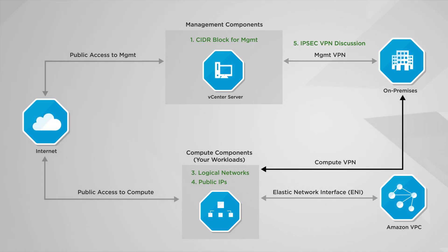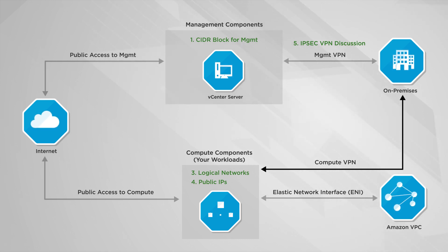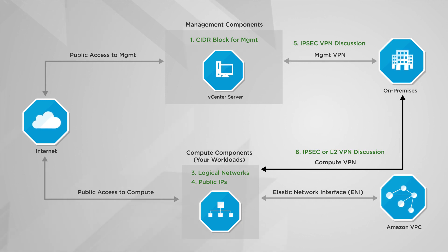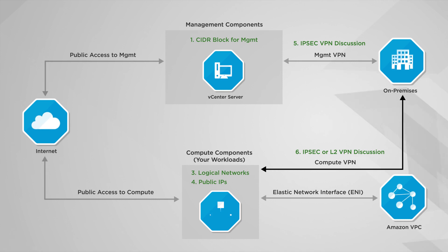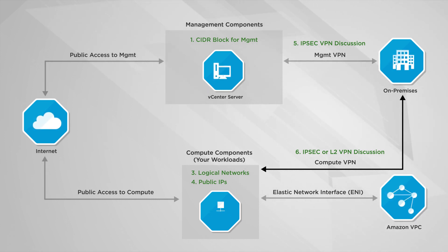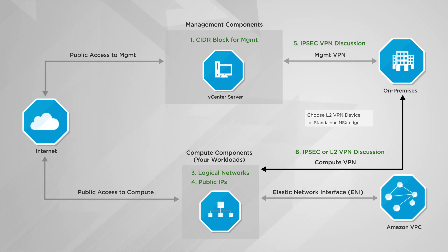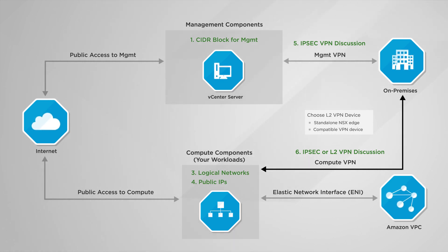The second VPN you will need to consider is the Compute VPN, which handles network traffic for your workload VMs. If you are using an IPsec VPN here, the settings will be very similar to the configurations for the IPsec VPN for management. But you have a second option for the compute connection in the form of a Layer 2 VPN, which will allow you to stretch your IP network from on-premises to VMware Cloud on AWS. With the Layer 2 VPN option, you can utilize a standalone NSX Edge or other VPN-compatible device deployed on-premises.